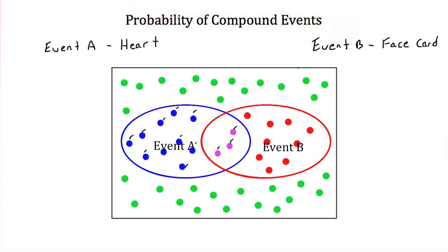If you were to count up all the dots in the red circle, you would find that there are 12 cards that satisfy event B. Event B is pulling a face card from a deck of cards, and there are 12 face cards in a standard deck of cards.